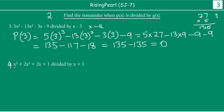Now let us take the fourth example. In this case, we are given a polynomial and we have to divide it by x plus 1. So let's find out the value at x equal to minus 1 — not x equal to 1. We need to find the value of the polynomial at x equal to minus 1.